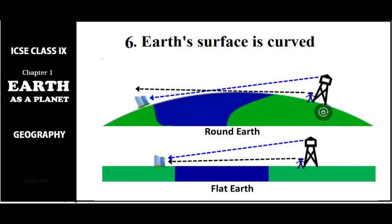Another proof is that the earth's surface is actually curved. This can best be observed from a coastal area or beach. If a ship approaches you, first you will see the top part of the ship — maybe a flag — then as it comes closer you will see the flagpole, then the deck, and finally the entire ship. That is because the surface is curved. Similarly, a man standing at the base of a tower won't be able to see a building on the other side.